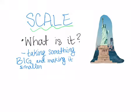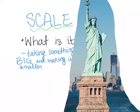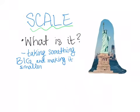One way to look at scale is taking something big and making it smaller. For example, the Statue of Liberty is big in real life, but if we want it on this page, we have to make it smaller.